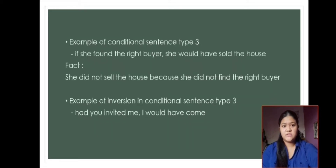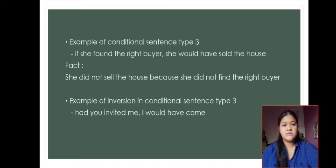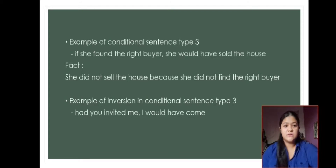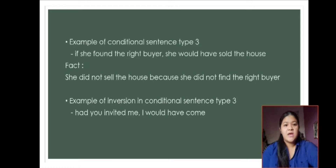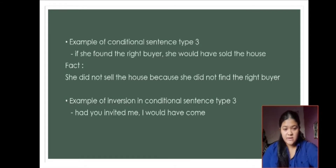An example of conditional sentence type 3: 'If she had found the right buyer, she would have sold the house.' Here 'if' introduces the clause, 'she' is the subject, 'found' is verb 3, 'the right buyer' is the complement, then 'she' is the subject, 'would have' is the modal structure, and 'sold' is verb 3. The fact is: she did not sell the house because she did not find the right buyer. An inversion example: 'Had you invited me, I would have come,' where 'had' is the auxiliary, 'you' is the subject, 'invited me' is the complement, then 'I' is the subject, 'would have come' is the result.